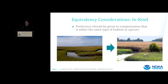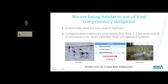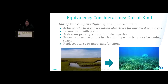With respect to equivalency in habitat, the NOAA procedures state that preference should be given to compensation that is the same type of habitat or species affected by the impacts. Out-of-kind compensation is unfortunately the norm when it comes to many estuarine and marine habitats. For example, when the city of Virginia Beach wanted to conduct dredging, their consultants proposed a one-to-one compensation for impacts to marsh habitat, but only a 0.33-to-one for mudflat habitat. A marsh does not provide the same function and services as a mudflat, and there's no good reason for offsetting mudflat losses at less than a one-to-one ratio. The procedures do talk about situations when out-of-kind compensation is appropriate, most importantly when it would achieve the best conservation outcome for affected species and habitat.